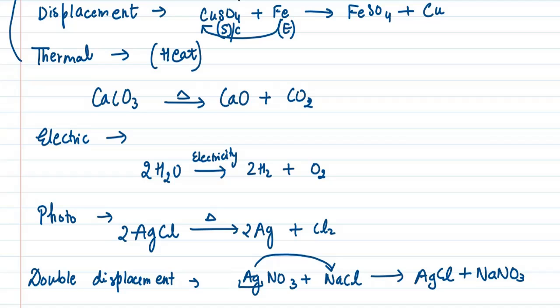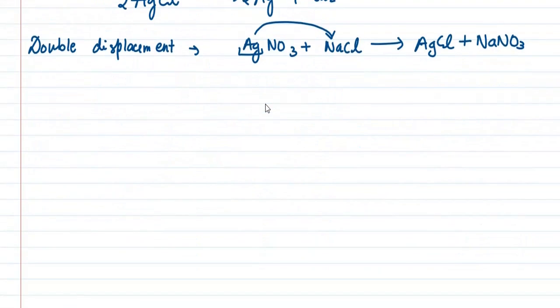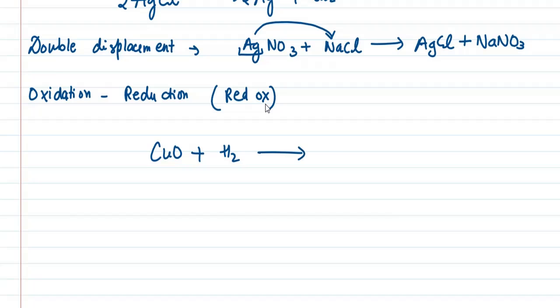Last is oxidation and reduction. When oxidation and reduction happen together, it is a redox reaction. Let's see an example: CuO plus H2 gives copper and H2O. Here, H2 is the reducing agent and is being oxidized, converted to H2O. CuO has been reduced to Cu. This is the reduction part and that is the oxidation part.